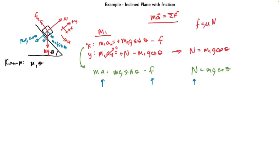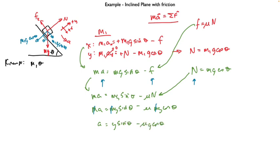Now I have to write out my equations. In the x direction: M1g sine theta pointing positive down the slope, and friction negative. In the y direction: normal and M1g cosine theta. The acceleration in y is zero, so N equals M1g cosine theta. We never used that normal force equation before, but guess what happens now?